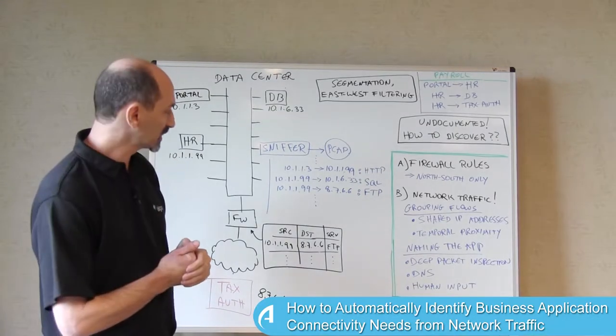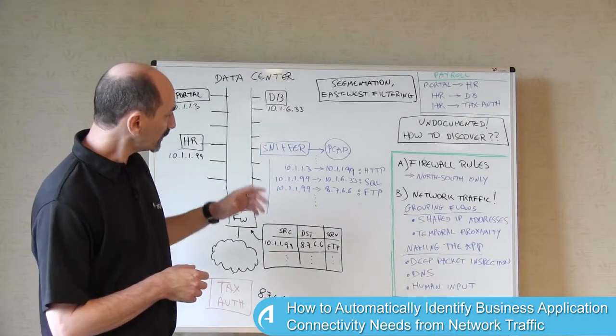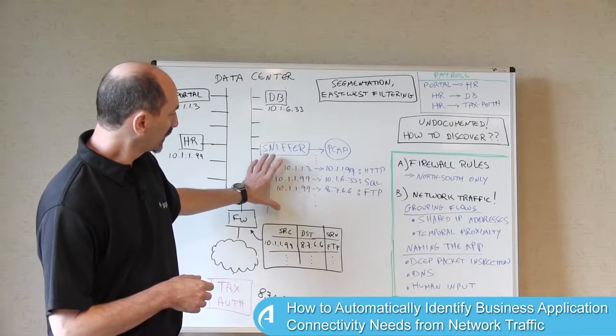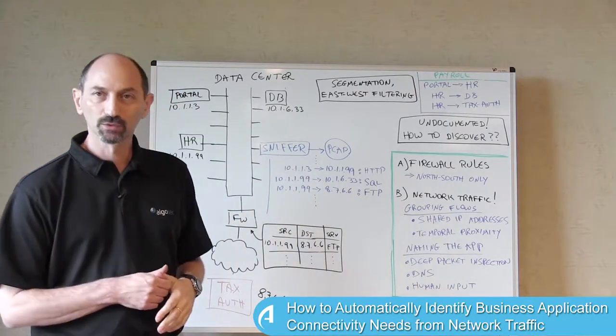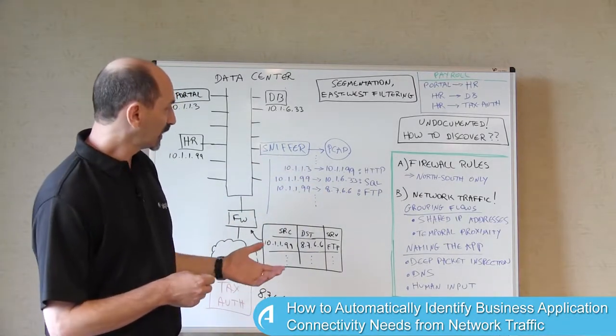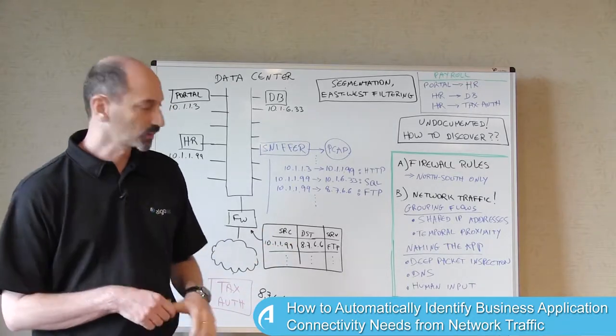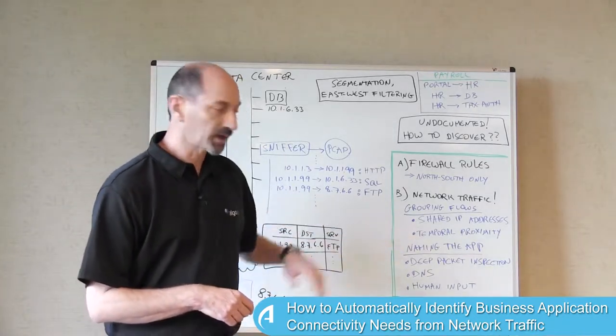So I'd like to suggest a few directions that can help. The first is grouping the flows into meaningful groups. How do you do that? Well, here's a few things that you could consider. One is looking for shared IP addresses.